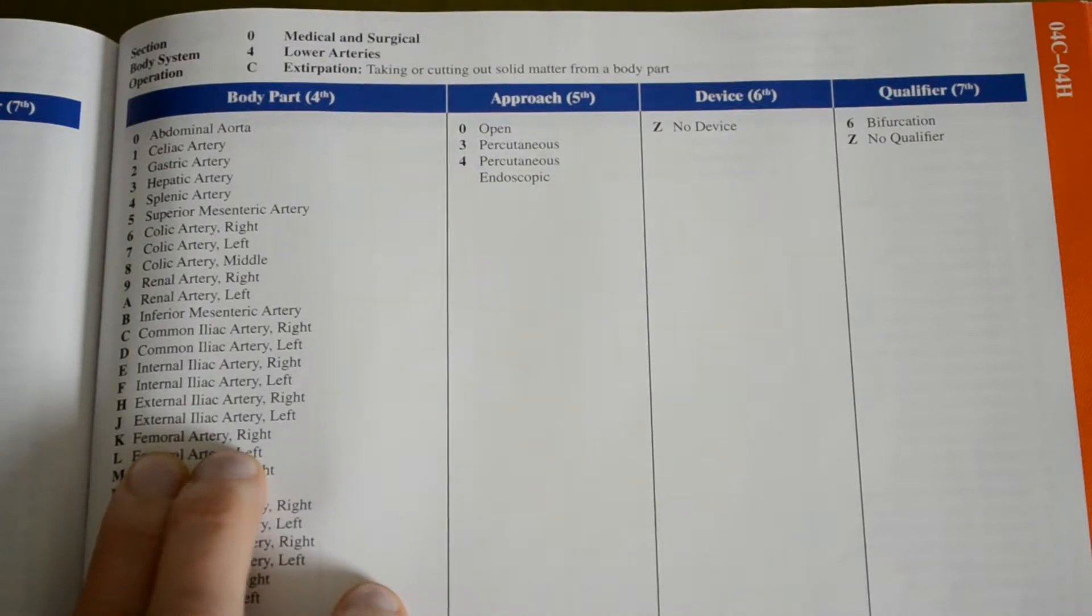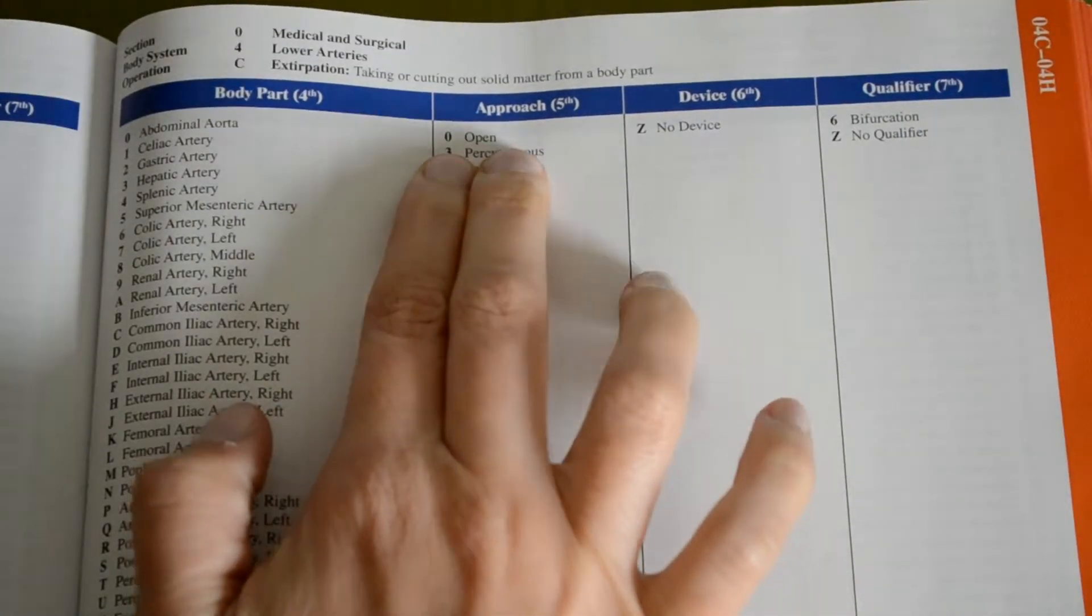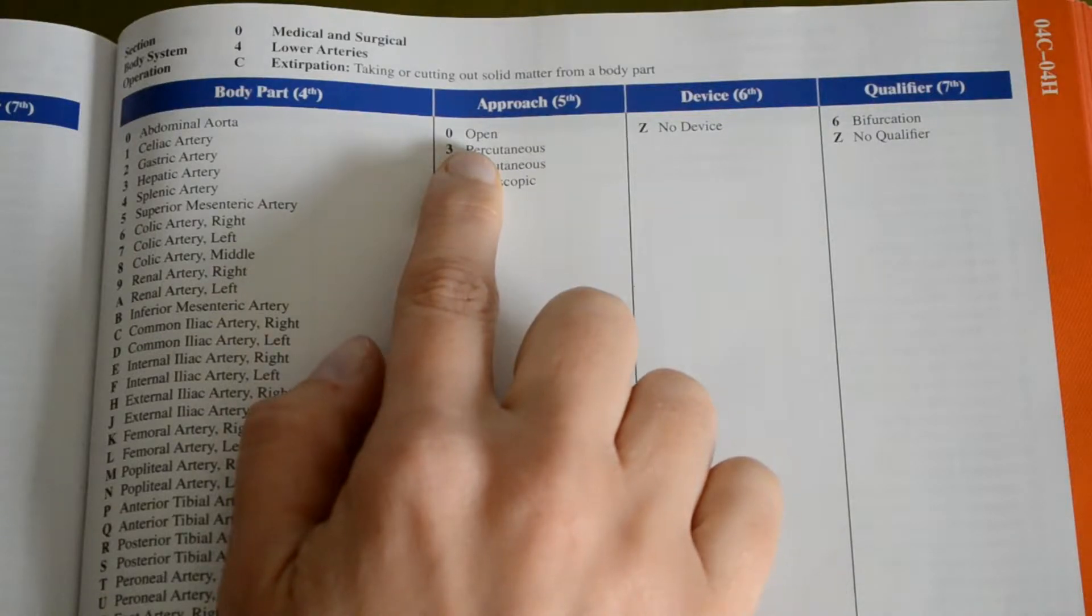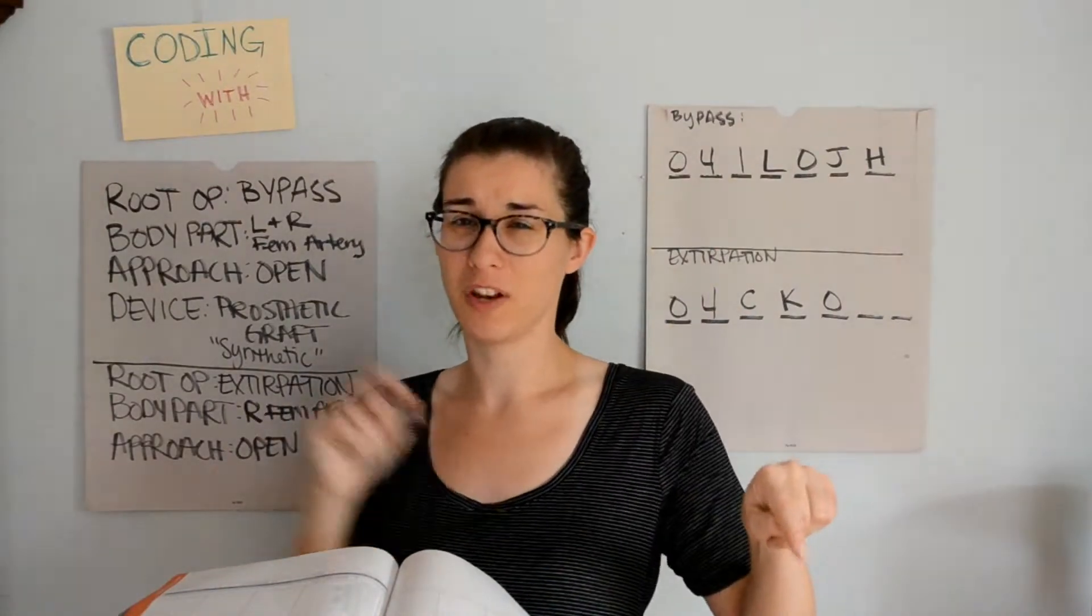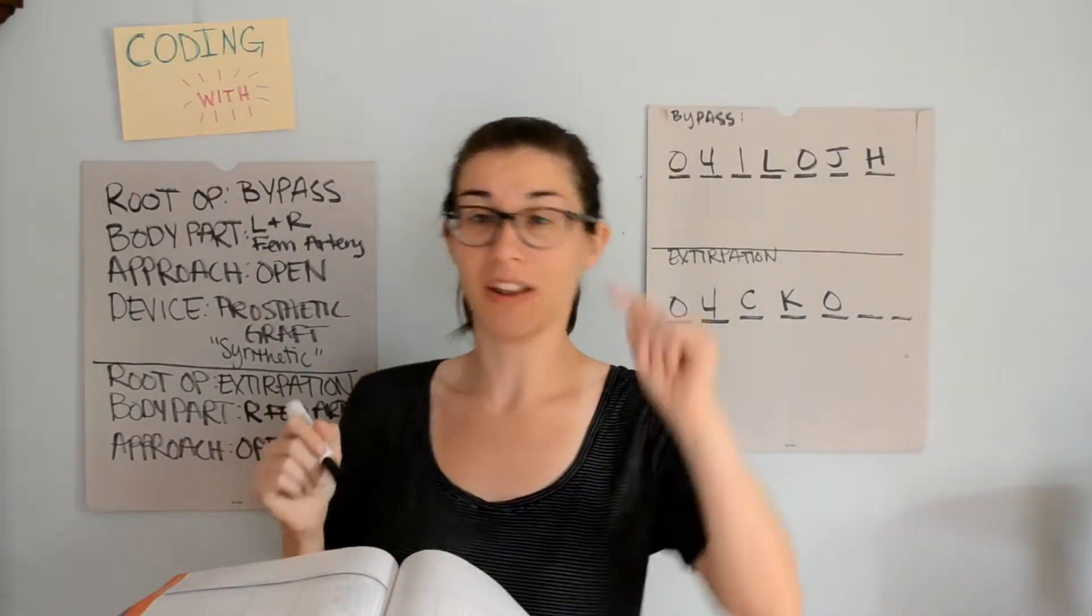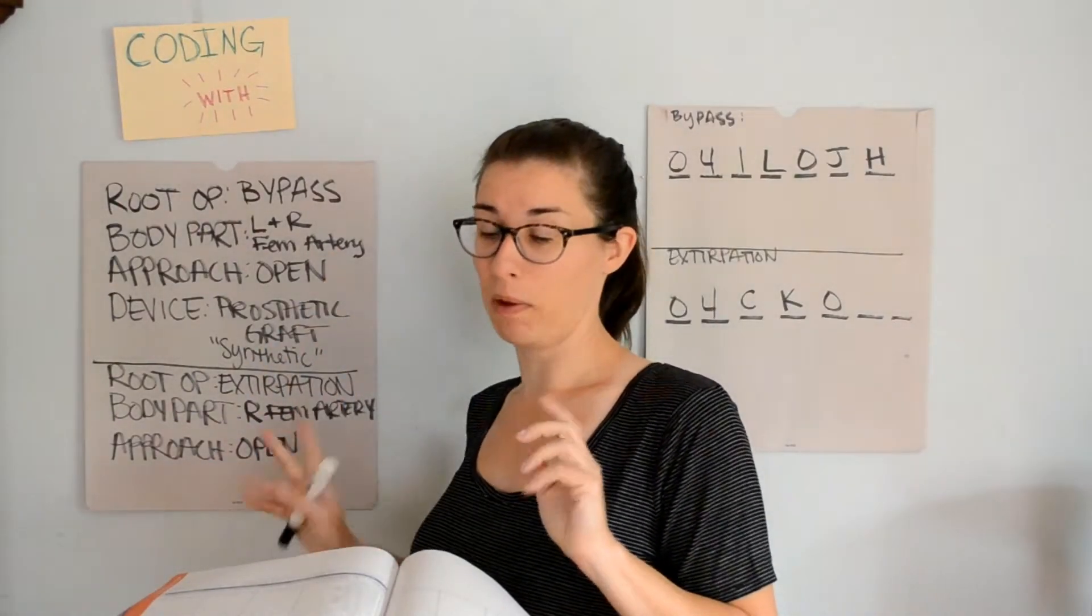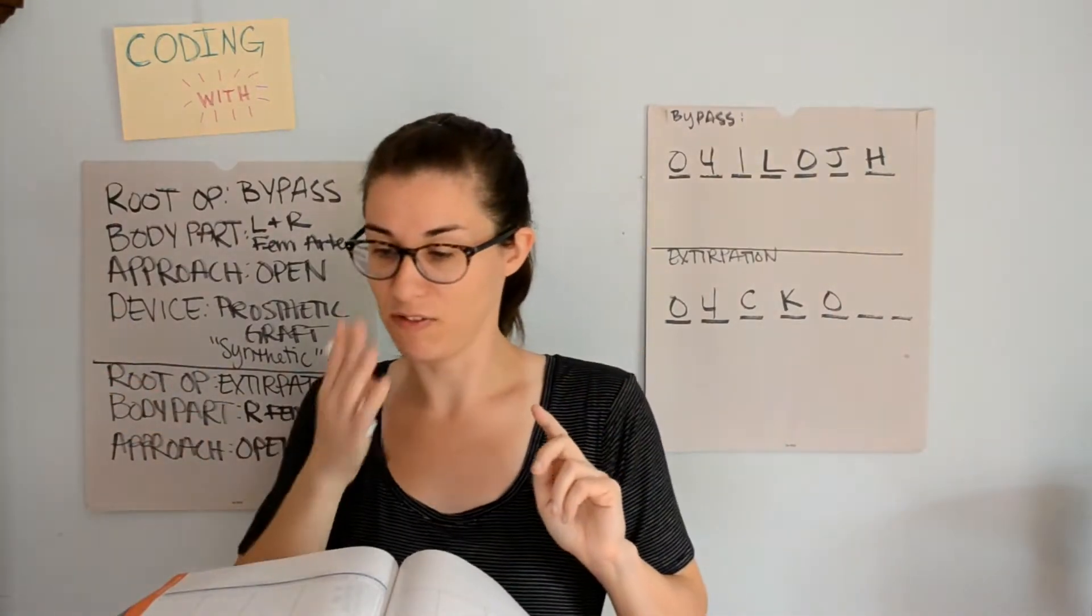So the approach column, or the fifth character placement, we said that it was open, since it happened while they still had the patient opened up in the same approach as the femoral bypass graft. So we are going to choose open. If there are any coders out there that watched the previous video where we read the op report, if not, go to the link in the description. Let me know if you agree if both of these are open. It sounded to me like it was open. Let me know if you think it's percutaneous.